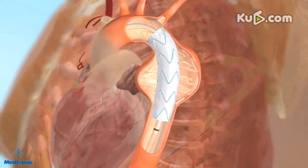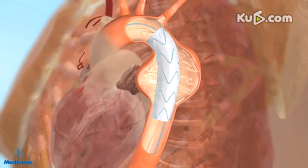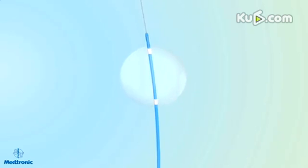Gently remove the delivery system using fluoroscopy to ensure that the stent graft does not move during withdrawal. The Reliant StentGraft Balloon Catheter, packaged separately, may be used to remove wrinkles and folds from the graft material as needed and to model the stent graft to the vessel wall.